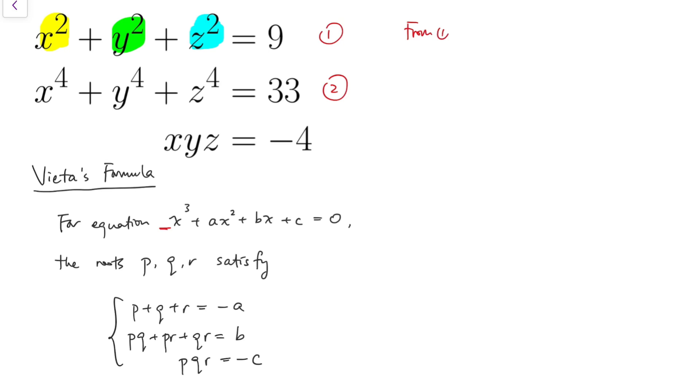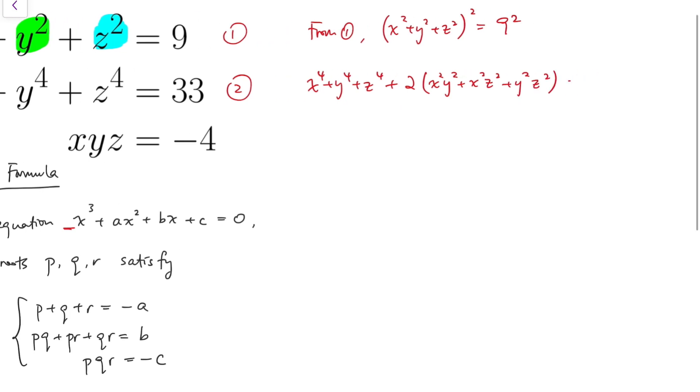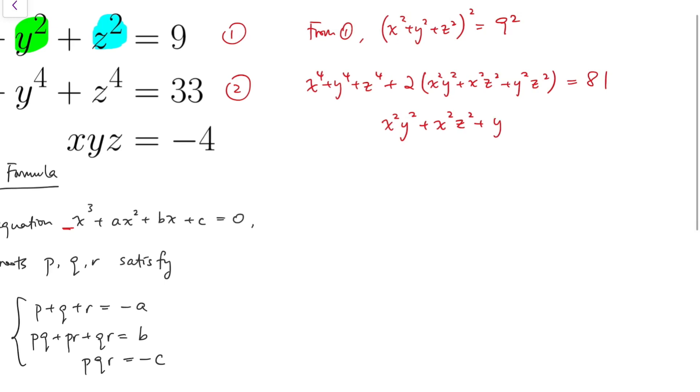If I square both sides for the first equation, the right side has 9 squared. Expanding, we have the sum of fourth powers, just like equation 2, and then the rest would be 2 times the sum of the mutual products. Simplifying, we know that the sum of the mutual products is equal to 24.